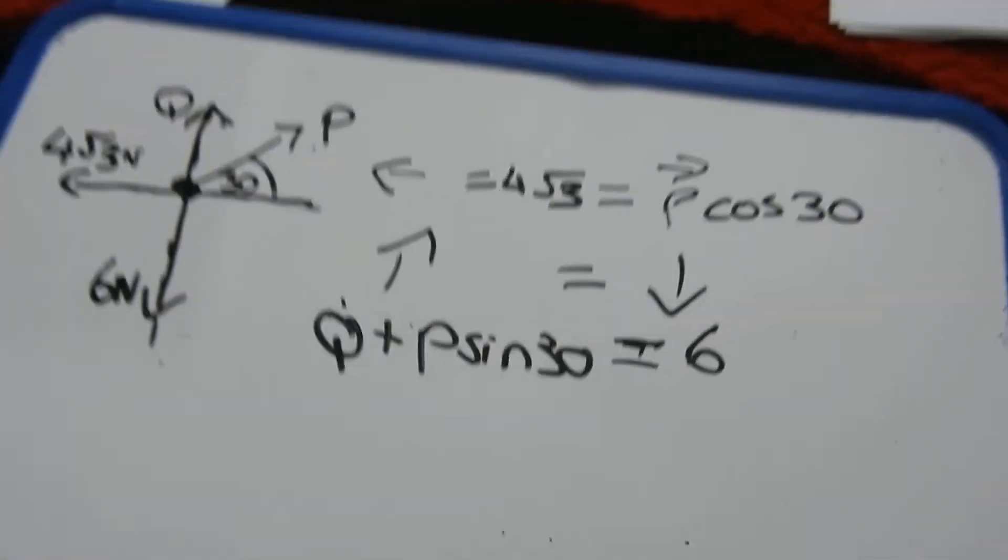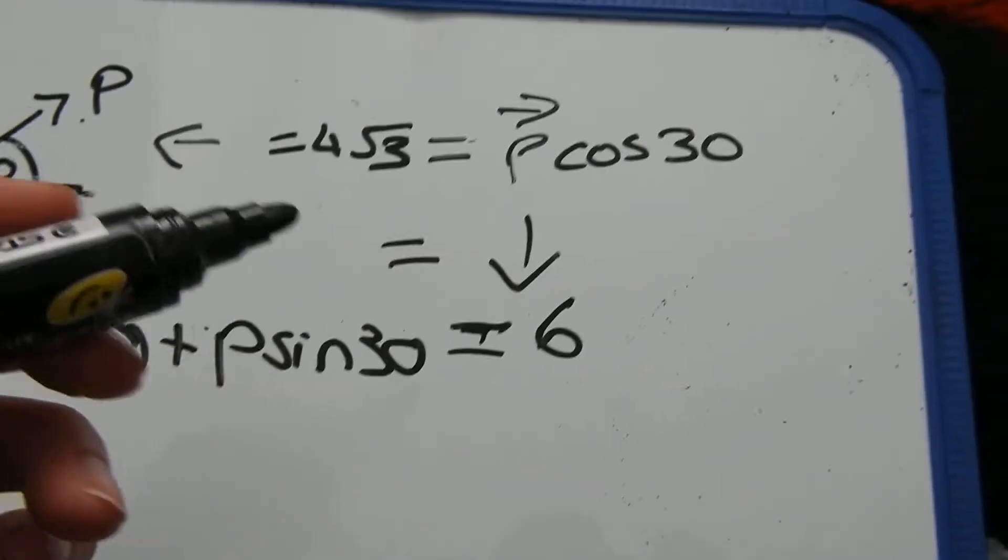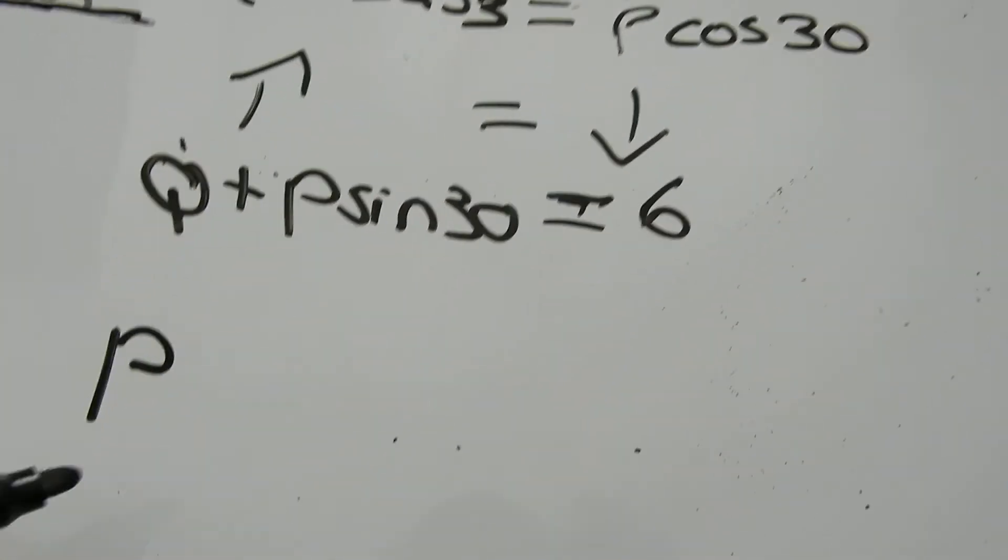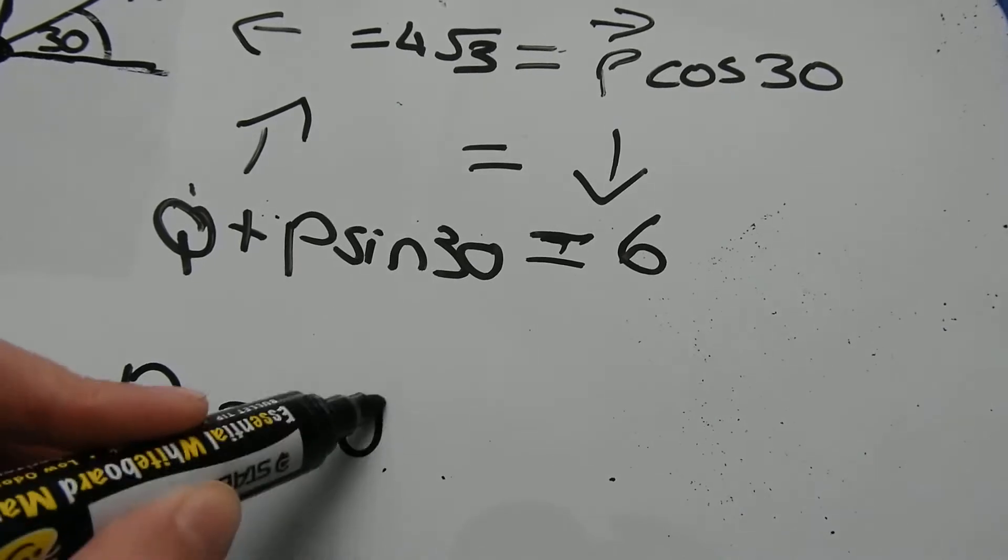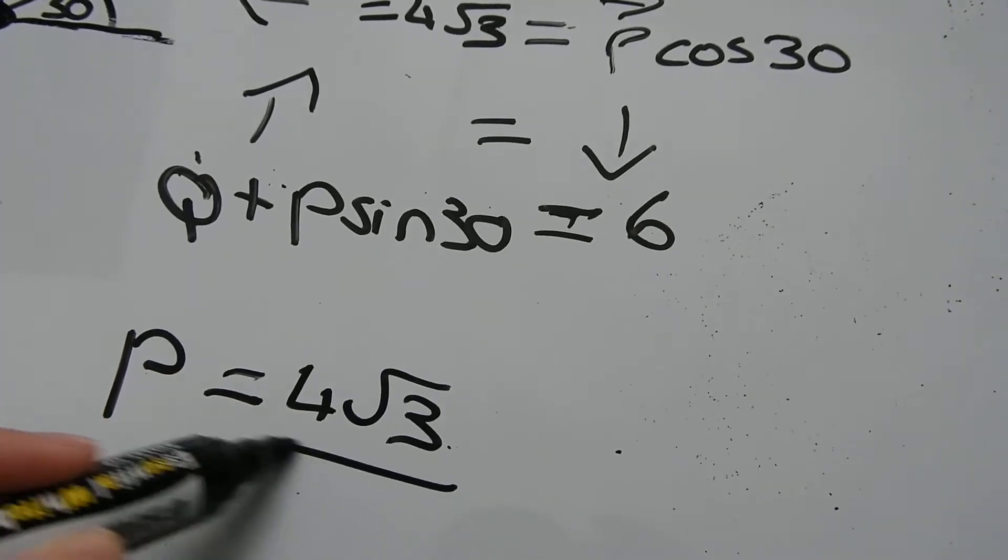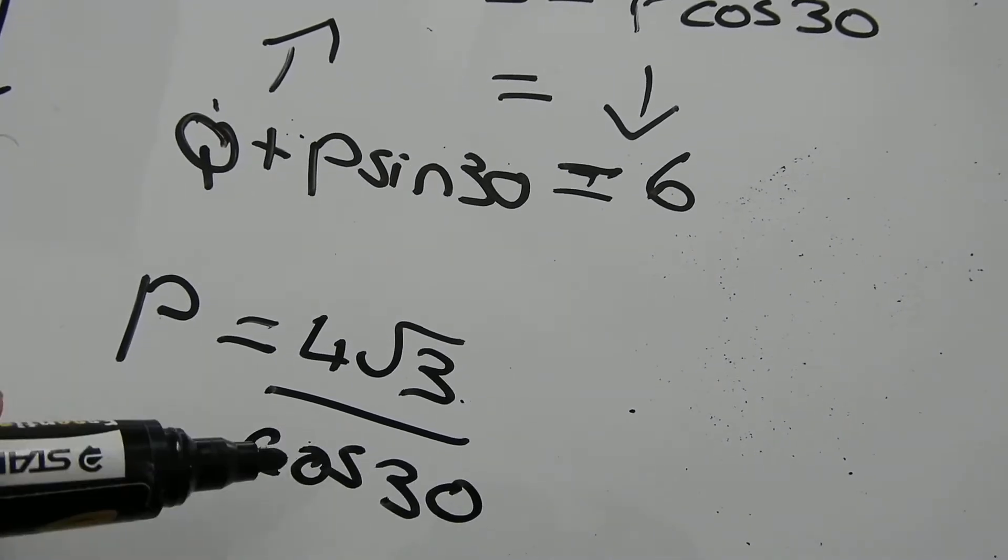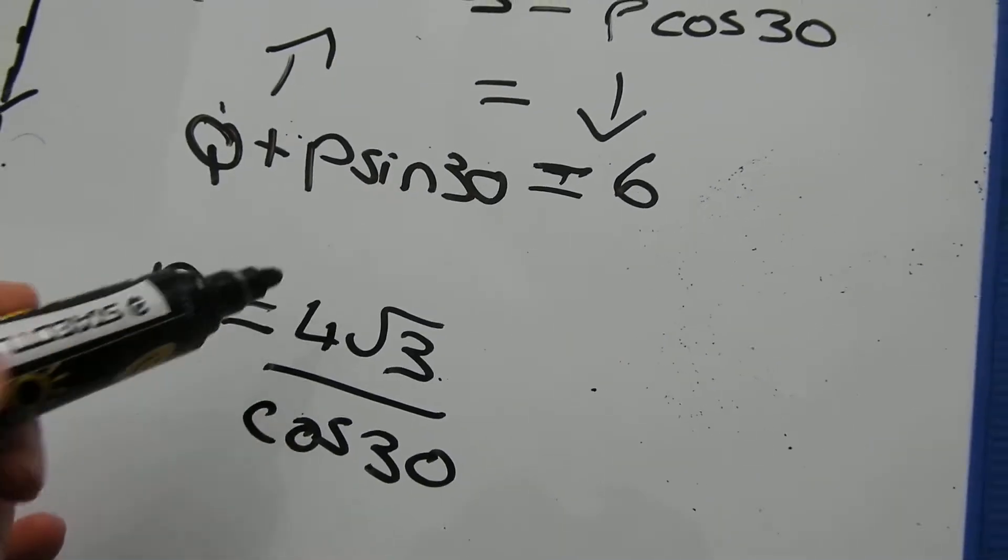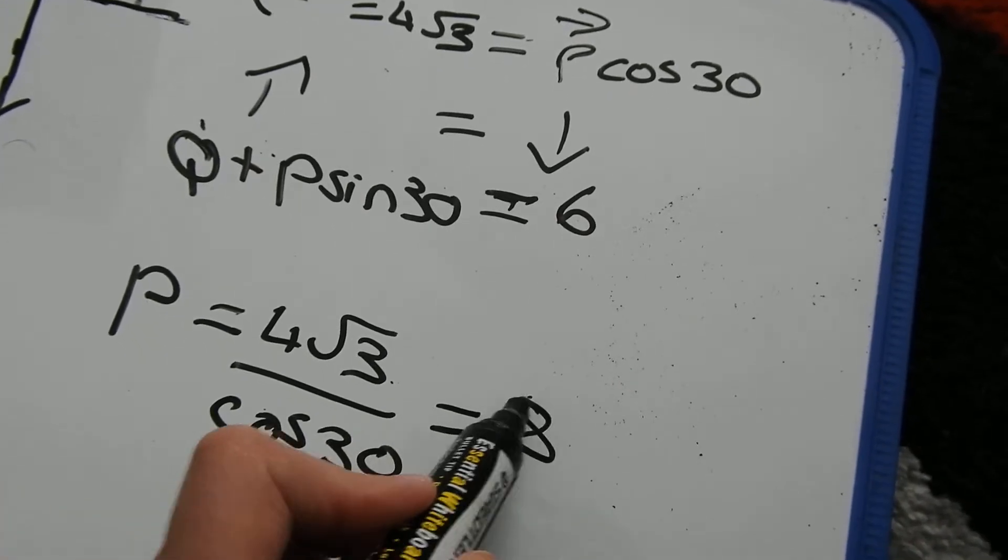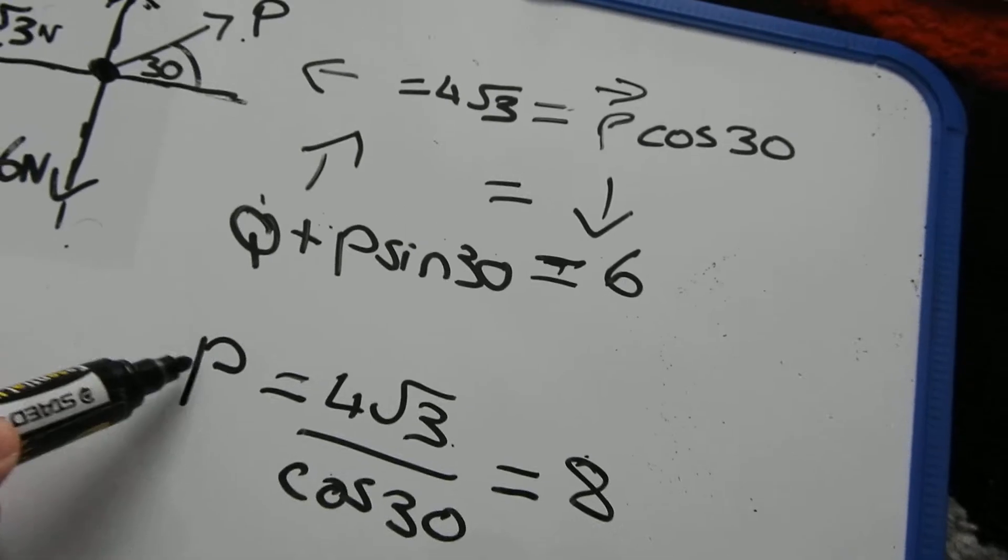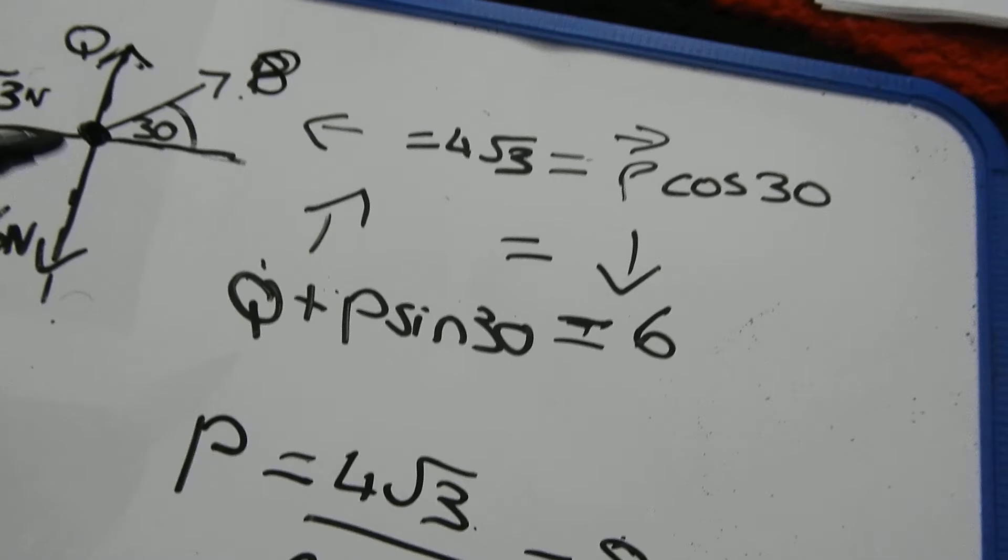So P, at the minute P is being multiplied by cos 30. To get rid of that, I'm going to divide each side by cos 30. So it's going to be 4 root 3 divided by cos 30. Now obviously cos 30 is the number if you type it in your calculator and this is the same. And when you work that out, we actually get that P is equal to 8. So we've already found our one unknown. P is now 8.